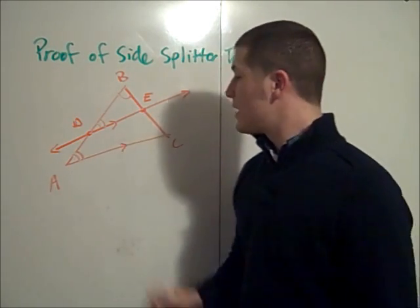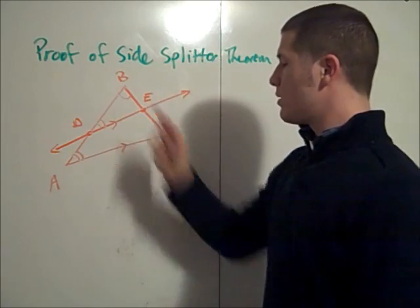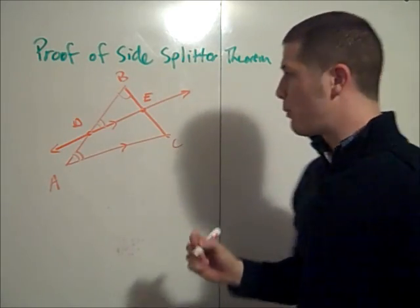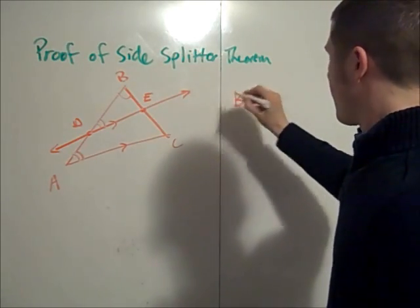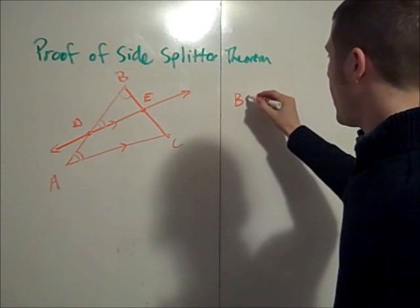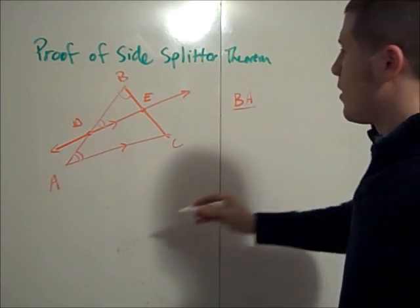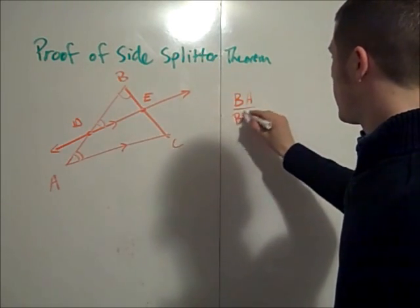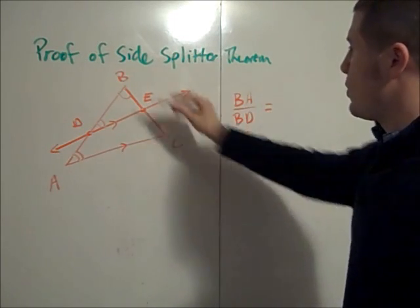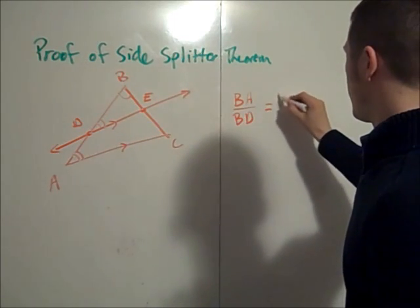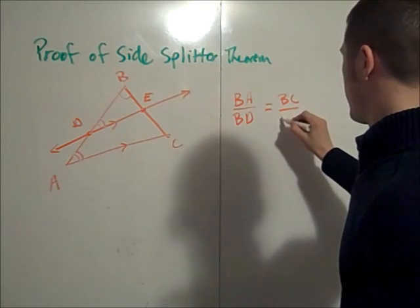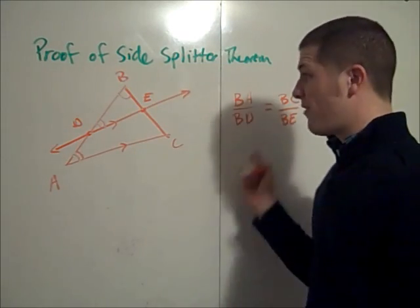Now since those two triangles are similar we can write this proportion. BA over BD is equal to BC over BE. And that's by definition of similarity.